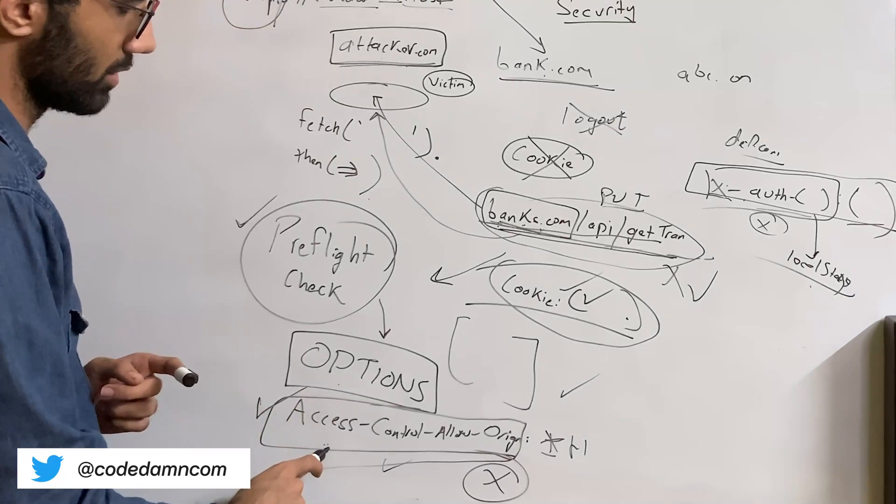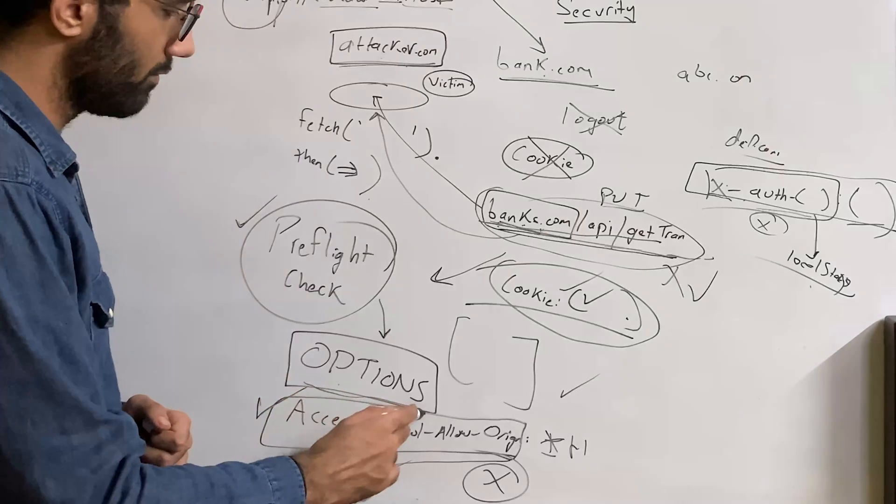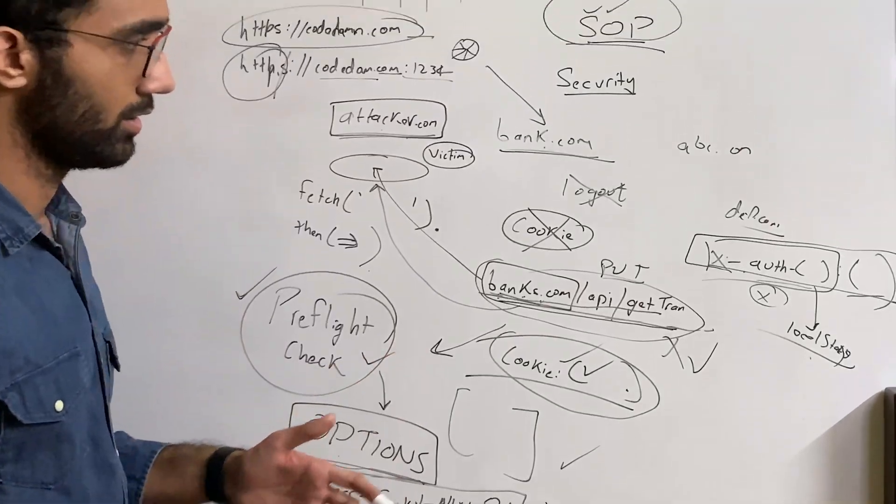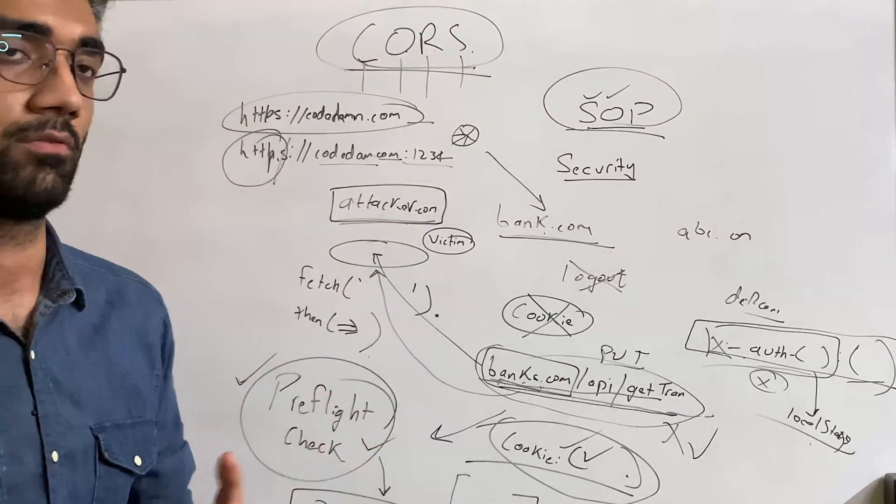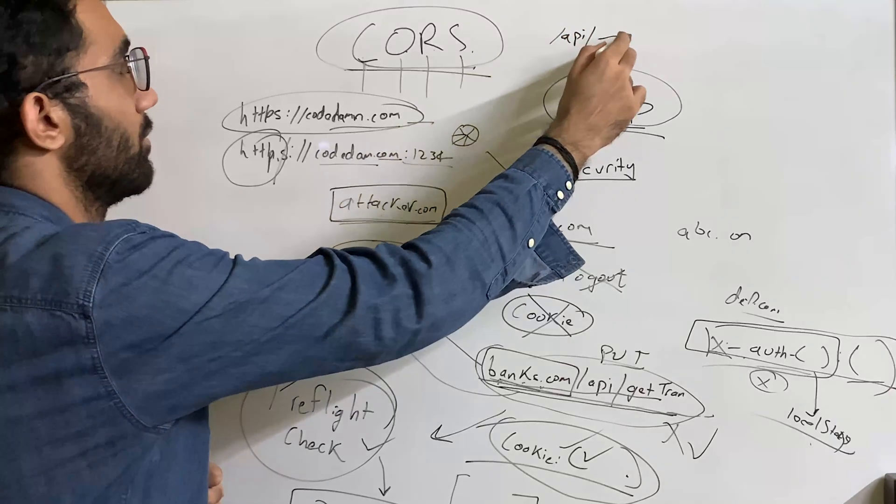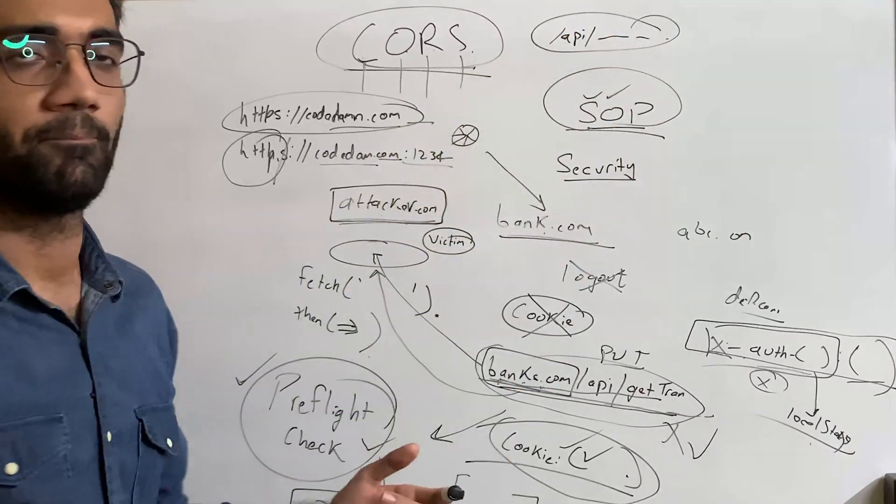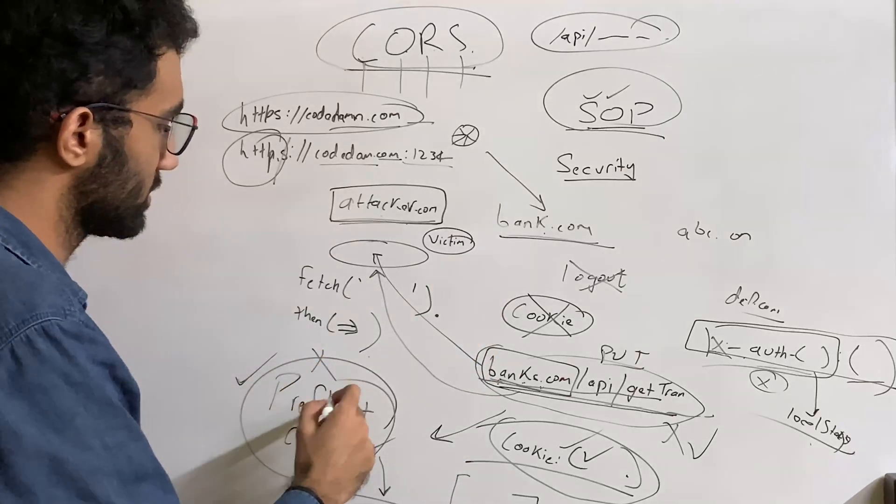If your preflight check is successful or not. If you are doing different cross-origin request at all. Even for example, if you are on codedamn.com and if you do a slash API slash whatever, then this is not a CORS request. It's not, because you are on the same origin, so your preflight check and all this stuff will never happen on the same origin.